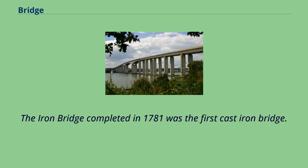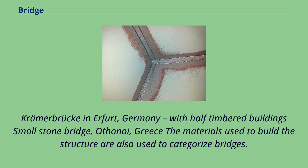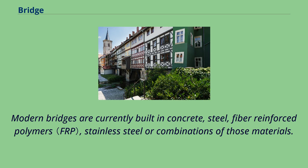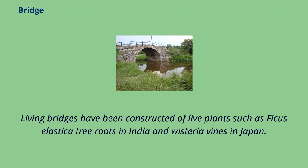The Iron Bridge, completed in 1781, was the first cast-iron bridge. The materials used to build a structure are also used to categorize bridges. Until the end of the 18th century, bridges were made out of timber, stone, and masonry. Modern bridges are currently built in concrete, steel, fiber-reinforced polymers, stainless steel, or combinations of those materials. Living bridges have been constructed of live plants such as ficus elastica tree roots in India and wisteria vines in Japan.